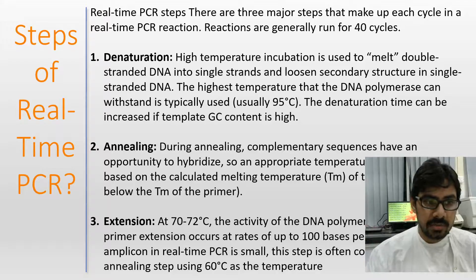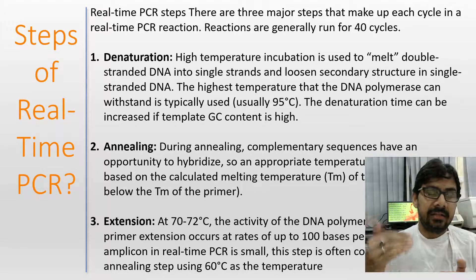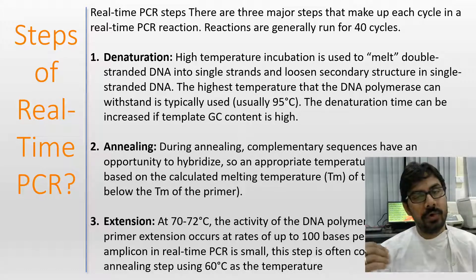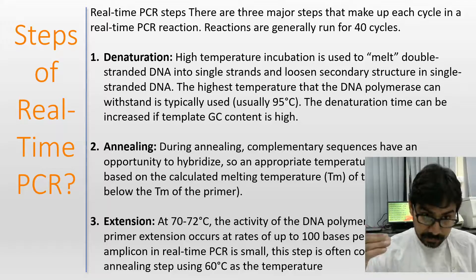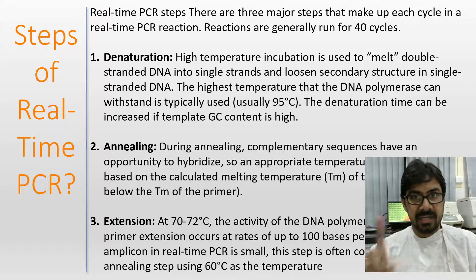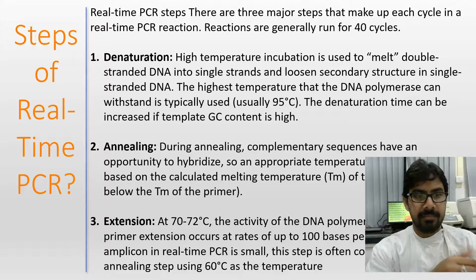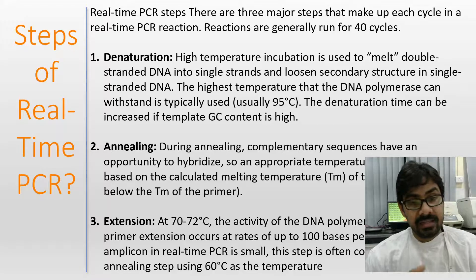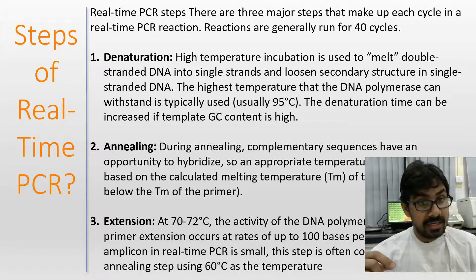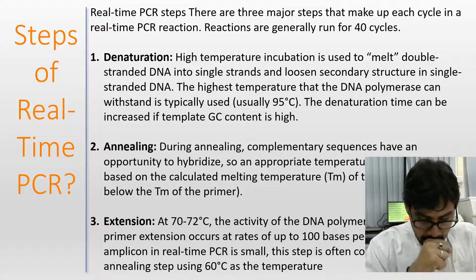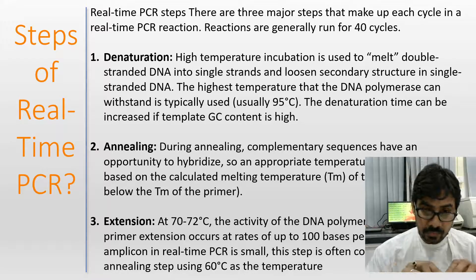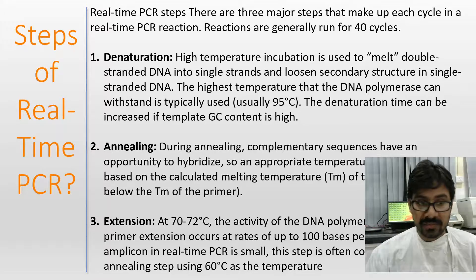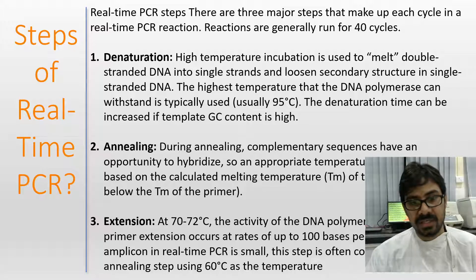The temperature is set according to the primer used, which is standardized. This is the step when the primer binds to the single-stranded DNA. The last step is extension, performed at 70 to 72°C, where DNA polymerase — the enzyme used for extension — extends the DNA at a speed of up to 100 base pairs per second. In 40 cycles, you get the complete real-time PCR result.